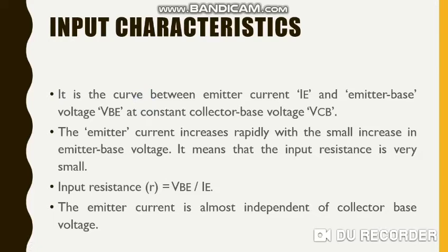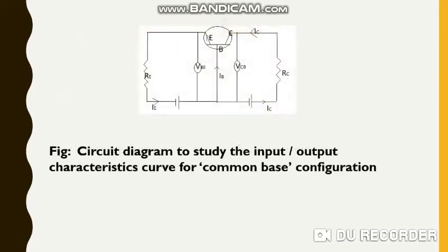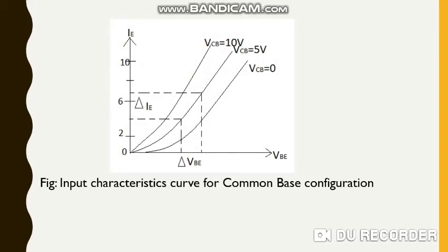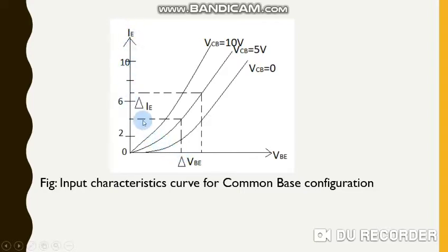The emitter current increases rapidly with a small increase in emitter base voltage, which means the input resistance is very small. In the graph, it has been plotted between IE, emitter current, and VBE, the emitter base voltage. With a small increase in VBE, IE increases rapidly. You can see there is not much progress on the x-axis, but on the y-axis the graph changes rapidly, going upward.